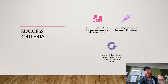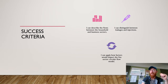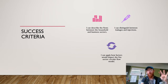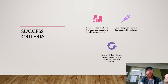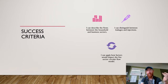Our success criteria is that you can describe the four flows between the household and business sectors — they're going to be really, really important — and that you can distinguish between leakages and injections to aggregate demand, and apply how factors that impact the five-sector circular flow model affect aggregate demand as well as aggregate supply.